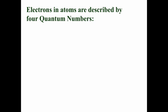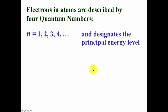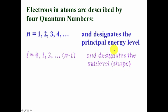So the summary is electrons and atoms are described by four quantum numbers. The one we've seen the most is the n quantum number, the principal quantum number. It can have values of 1, 2, 3, 4, it can keep on going. And this quantum number designates the principal energy level. So first energy level, second energy level, third energy level, or first, second, third shells, etc.